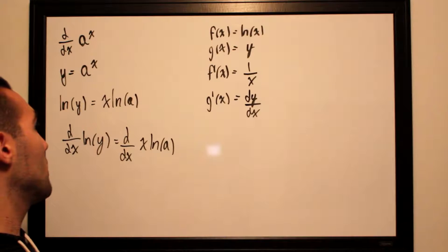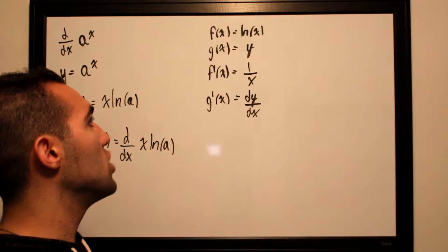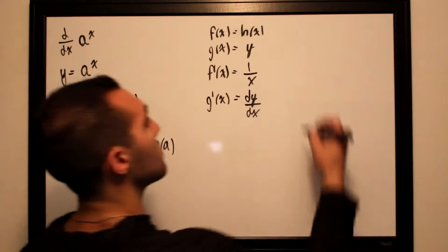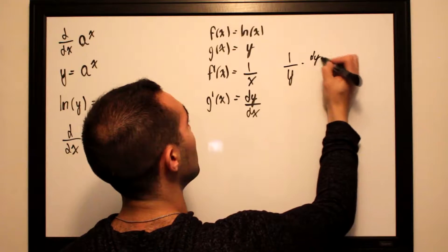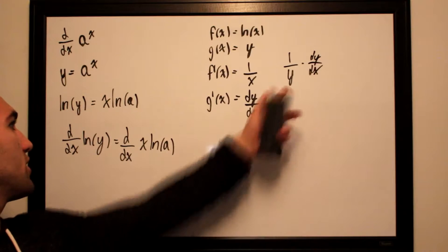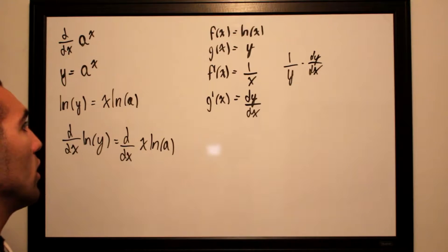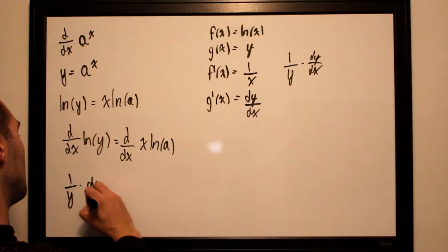If we take the derivative using the chain rule, it's f' composed of g multiplied by g'. So this becomes 1 over y multiplied by dy/dx. That's essentially what this part of the equation is going to look like: 1 over y times dy/dx.